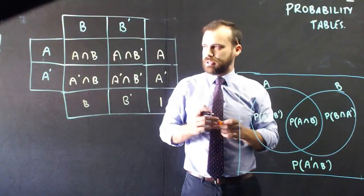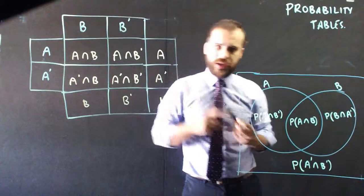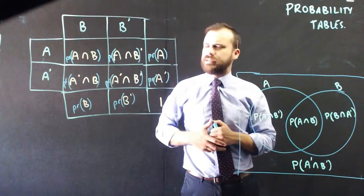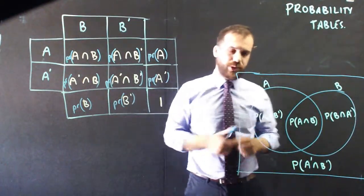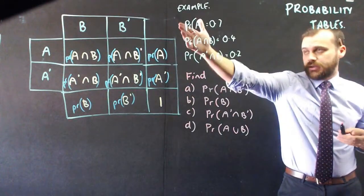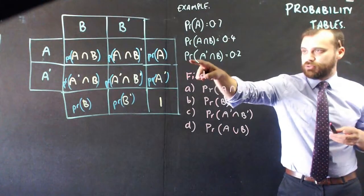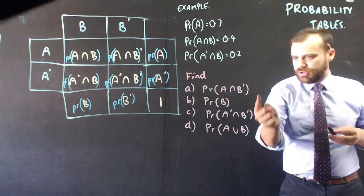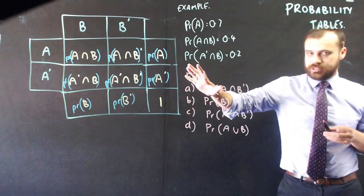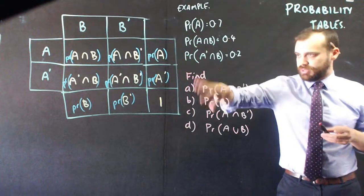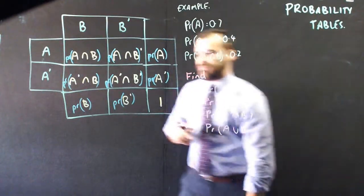This is a full probability table — I should probably neaten it up by putting P() everywhere. Now that we've got a probability table, let's do a question with it. Here's the example: if the probability of A is 0.7, and the probability of A intersection B is 0.4, and the probability of not A intersection B is 0.2, find all of the remaining probabilities. I'm going to fill in this table with what I know.